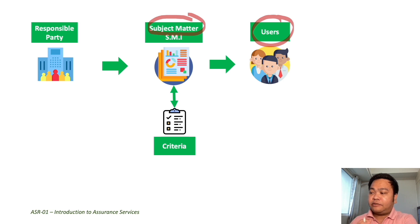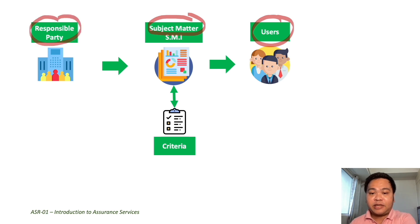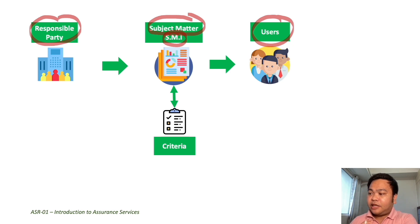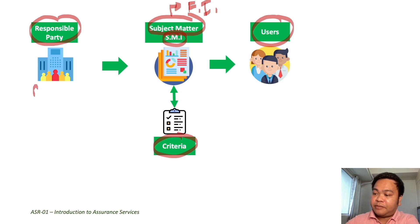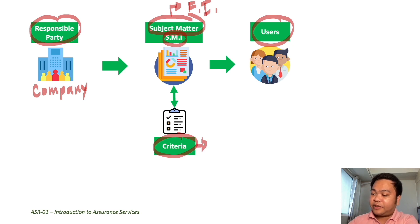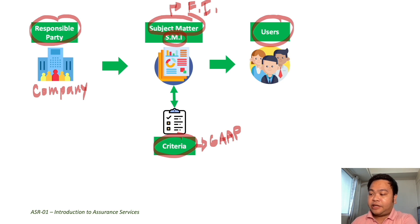The users need that information to make decisions — for example, whether to invest or to grant credit to a company. The information provider, designated as the responsible party, will supply that information to the users after preparing a report, which is the subject matter information, by evaluating or measuring the subject matter against a criteria. In our example, the financial information of a company is measured by the responsible party — say, a private company — based on a criteria like PFRS or GAAP.